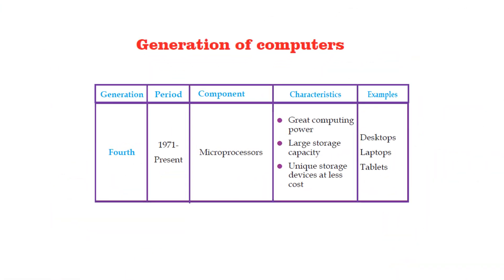The computers made in the period 1971 to the present date are said to be the fourth generation computers. These computers use microprocessors. They have great computing power. They have very large storage capacity, and they have unique storage devices at less cost. Some of the examples of the fourth generation computers are desktops, laptops and tablets. Now these are the ones we use today.